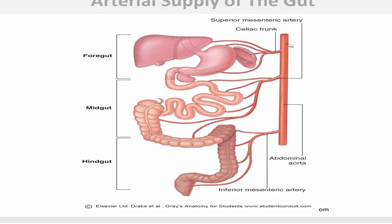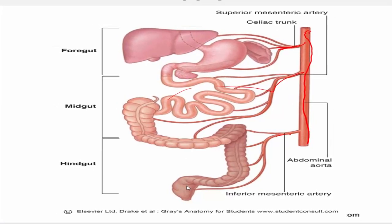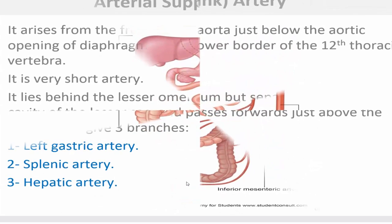This is the aorta, the main artery in the abdomen. This is the celiac trunk for the supply of the foregut, superior mesenteric for the midgut, and inferior mesenteric for the hindgut.